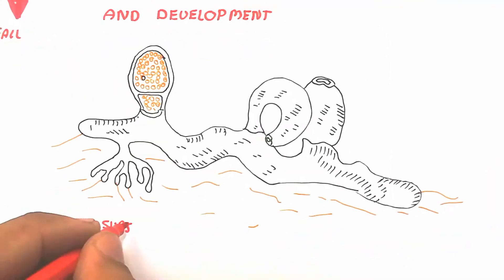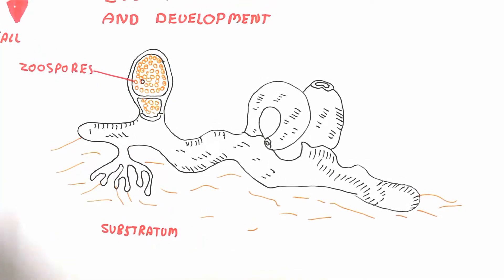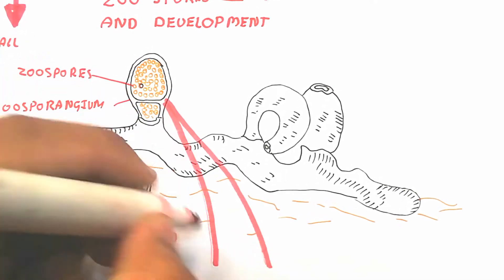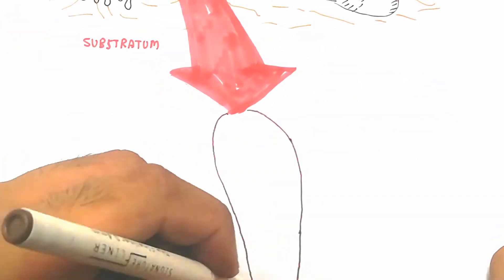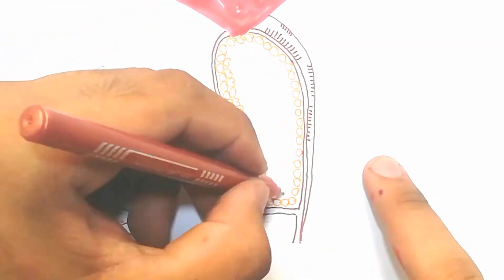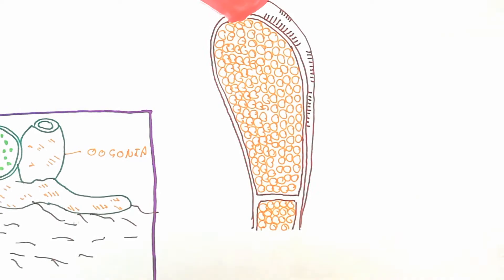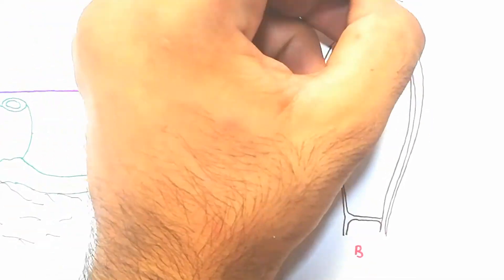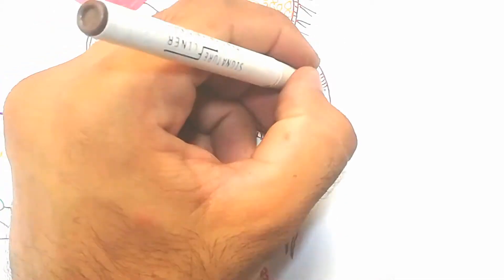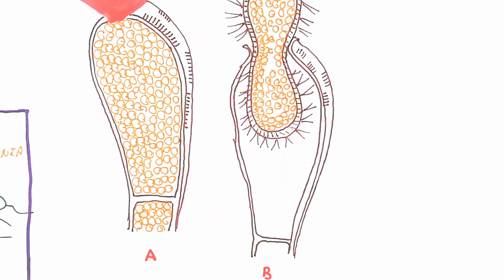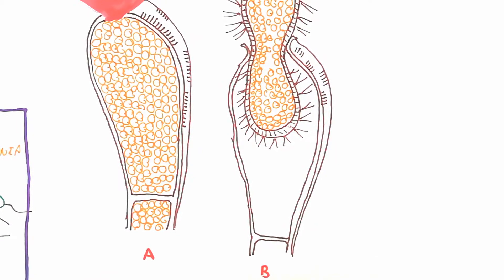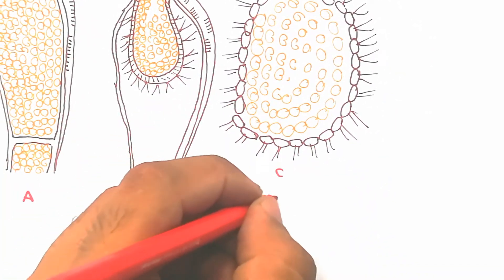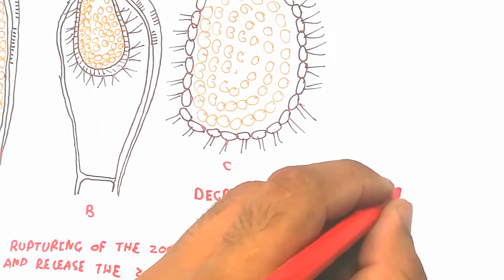The zoospore develops inside the zoosporangium. The sporangium has septa which create the zoospore. The cell wall ruptures — it is very thin — releasing the zoospores. The zoospores are covered by flagella. In the resting stage, the chloroplast and vacuole decrease inside the sporangium.